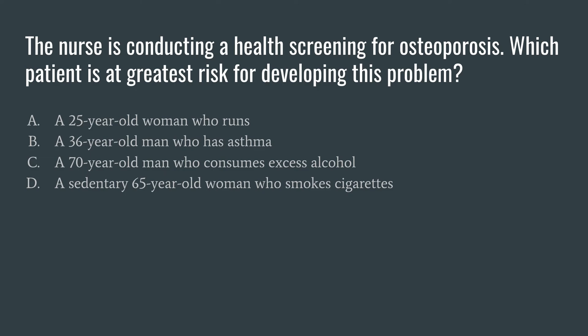Option C: a 70-year-old man who consumes alcohol — he's 70 with some alcohol consumption. And option D: a sedentary 65-year-old woman who smokes cigarettes. Option D is at greatest risk for developing osteoporosis because she is a 65-year-old female, meaning she is post-menopausal, she is sedentary, and she also smokes cigarettes. The 70-year-old man who consumes excess alcohol is also at risk, but the 65-year-old woman who smokes cigarettes is at the greatest risk for developing osteoporosis.